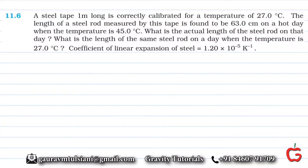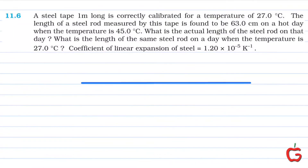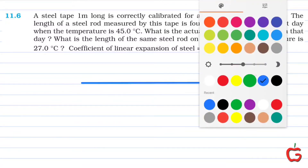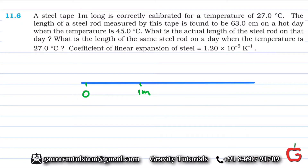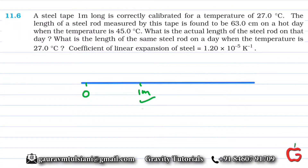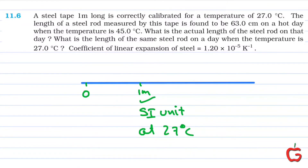A steel tape one meter long is correctly calibrated for a temperature of 27 degrees Celsius. This means at 27 degrees Celsius, the one meter mark on this steel tape is the actual one meter according to the SI unit. Since steel is a metal, the coefficient of thermal expansion is significant, so on a hot day it expands and on a cold day it contracts. At exactly 27 degrees Celsius, it measures exactly one meter.